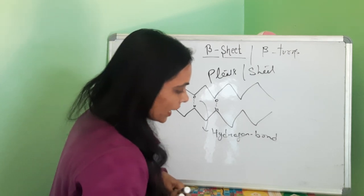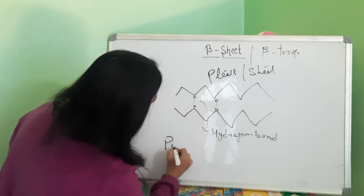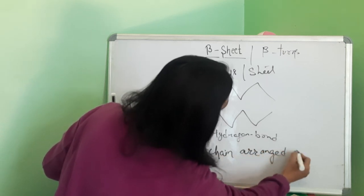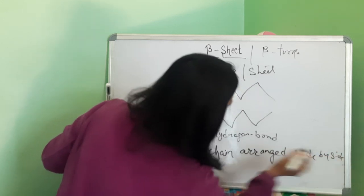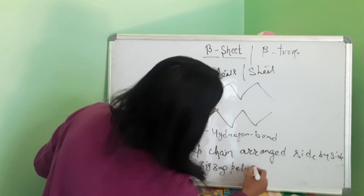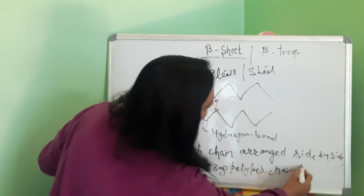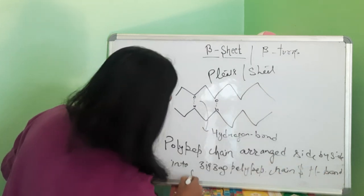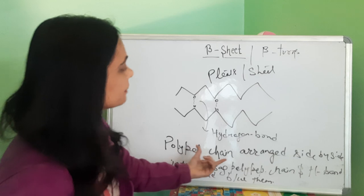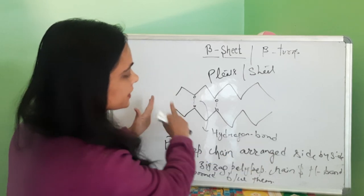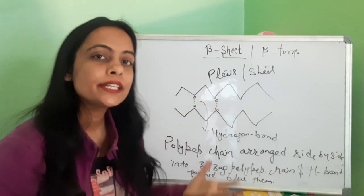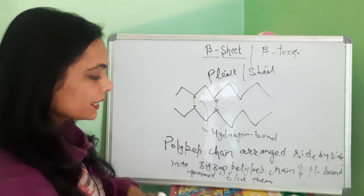So this is the definition: the polypeptide chain is arranged side-by-side in a zigzag manner, and hydrogen bonds are formed between them. The structure looks like plates or a sheet, and the structure is known as beta-sheet or beta-plated structure. So it is clear what beta-plated structure is.